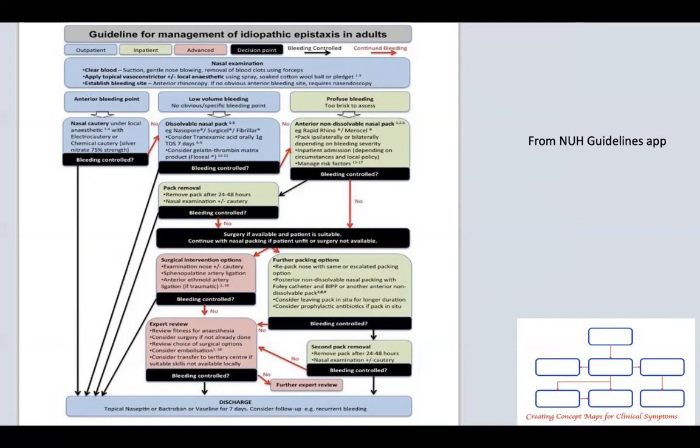To examine the nose, nasal cavity is cleared with careful suction, plus or minus forceps, which can be used if there is presence of blood clots. A topical vasoconstrictor with local anaesthetic can also be applied, such as cophenylcaine, and often this can be soaked in cotton wool balls and applied directly to the nasal cavity.